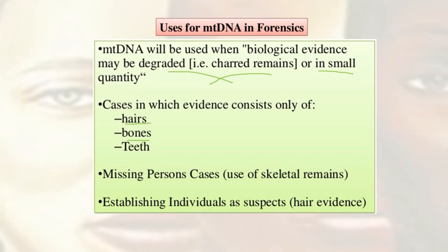For example, in missing persons' cases you can use skeletal remains, because probably somebody has gotten lost, died, and decomposed, and what can be found is skeletal remains. In this case, most of the biological evidence like blood and tissue has been degraded, so this is a good time to use mitochondrial DNA to identify those persons.